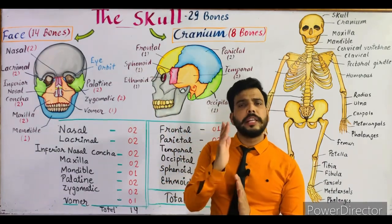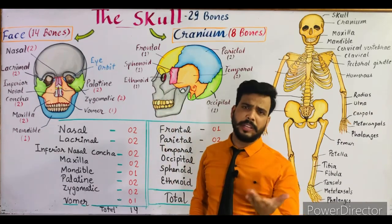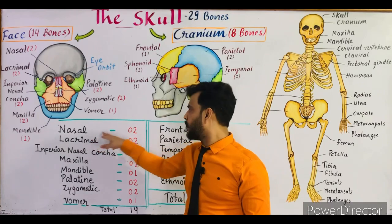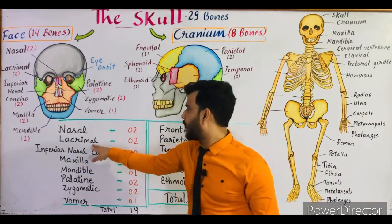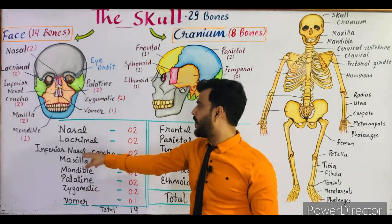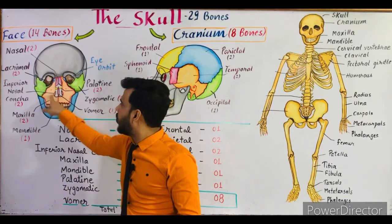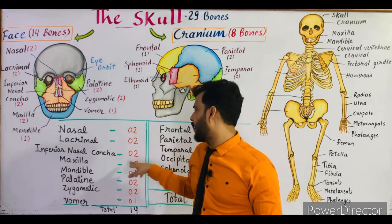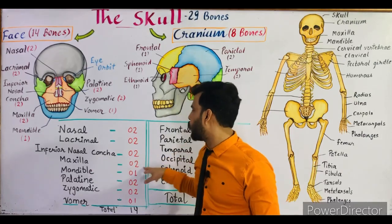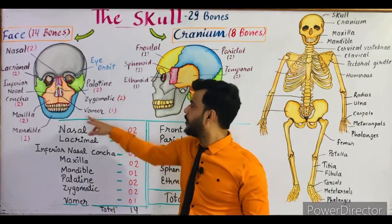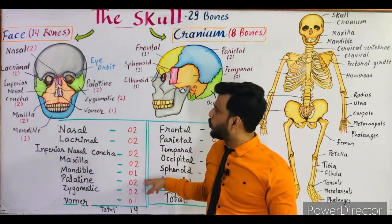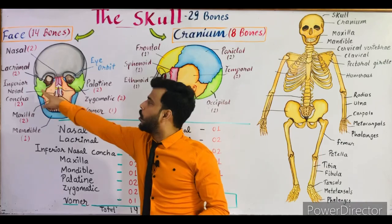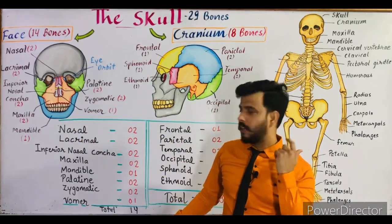You need to learn the names of these facial bones. Let me repeat them all: nasal bones — 2; lacrimal bones — 2; inferior nasal concha — 2; maxilla — 2; mandible — 1; palatine — 2; zygomatic or cheek bones — 2; and vomer — 1. The total of all facial bones is 14.